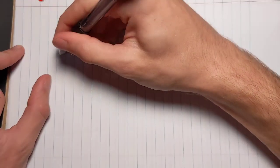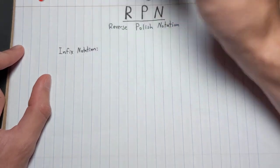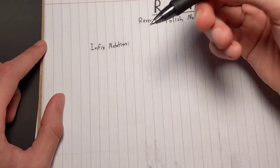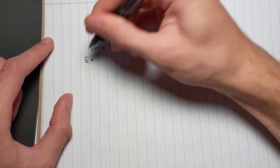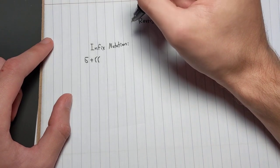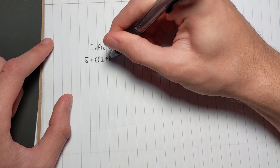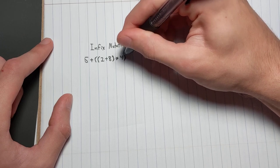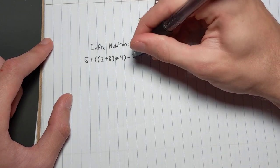Infix notation is probably what all of you are familiar with. Let's write down a random equation in infix notation — a pretty simple one. So let's do 5 plus, with a double set of parentheses, 2 plus 8, close that parenthesis, times 4, close that parenthesis, and then minus 3.